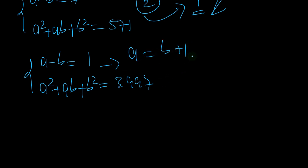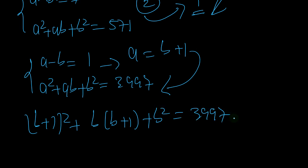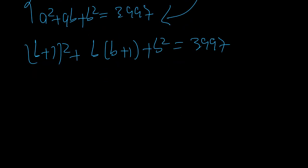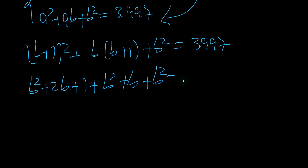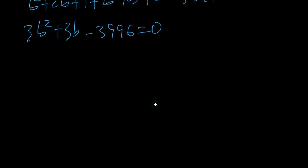From a minus b equals 1, we get a equals b plus 1. Substituting, we have (b+1) squared plus b(b+1) plus b squared equals 3997. Expanding: b squared plus 2b plus 1 plus b squared plus b plus b squared minus 3997 equals 0, giving 3b squared plus 3b minus 3996 equals 0.